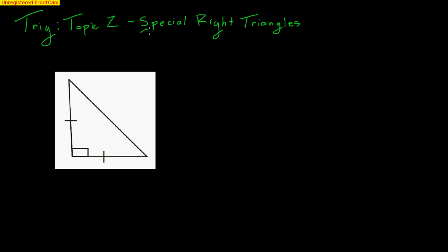There are two types of special right triangles, and the first type is a 45-45-90 triangle. That means you obviously have a 90-degree angle right here, and the other two angles are 45 degrees. If you remember anything from geometry, when the two other angles are the same, the sides across from them are the same. So in a 45-45-90 triangle, it's an isosceles triangle where these two other sides are the same.